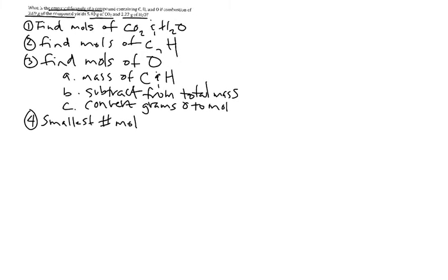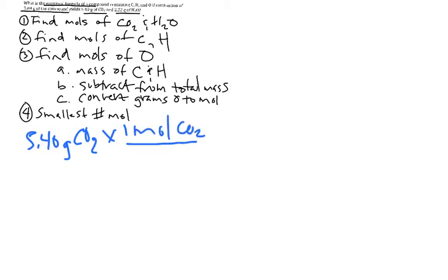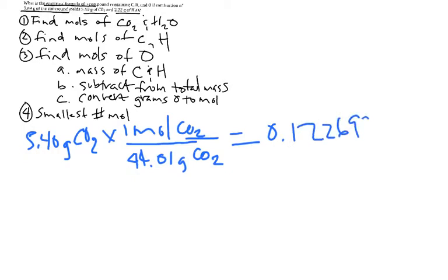Let's go through that — we're doing step one here. If we have 5.40 grams of carbon dioxide, we need the molar mass of carbon dioxide to find the moles. One mole of carbon dioxide is 44.01 grams. So if you do that on your calculator, you get 0.122699 moles of CO₂.